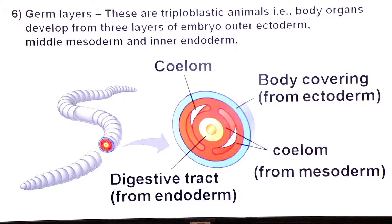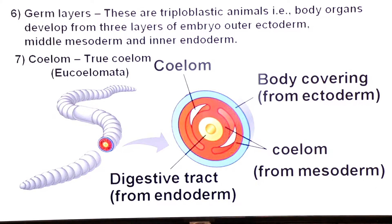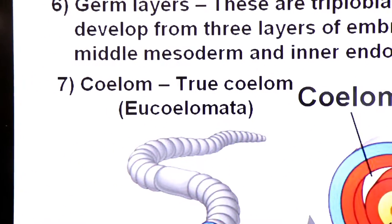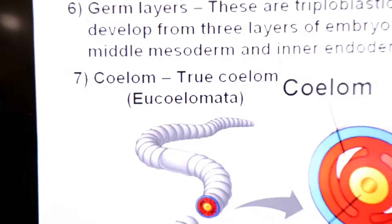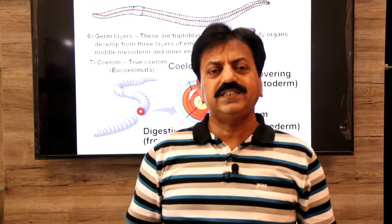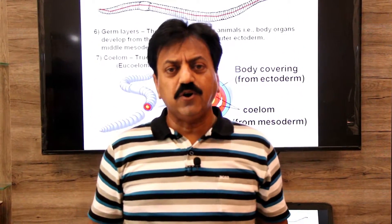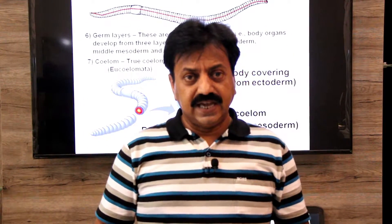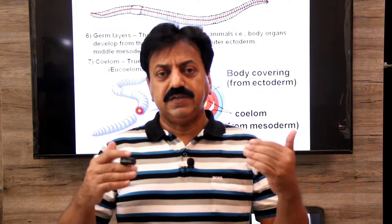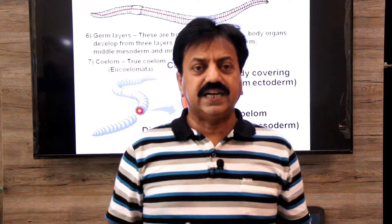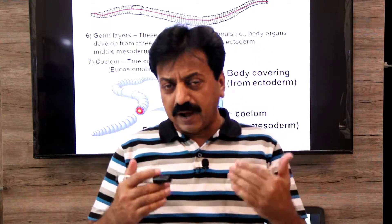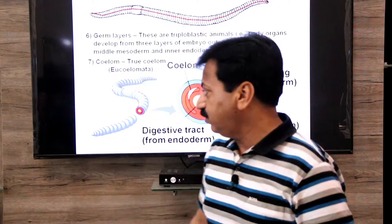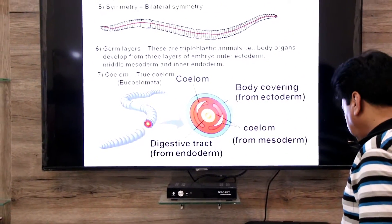The digestive tract is derived from endoderm. So the primary germ layers form organs by a process called organogenesis. In annelids, a true coelom is present — called true coelom or eucoelom. A true coelom is a coelom which is completely lined by mesoderm on both the outer and inner sides. A coelom completely present within mesoderm is called true coelom, also called eucoelom. So annelids belong to the group eucoelomata.